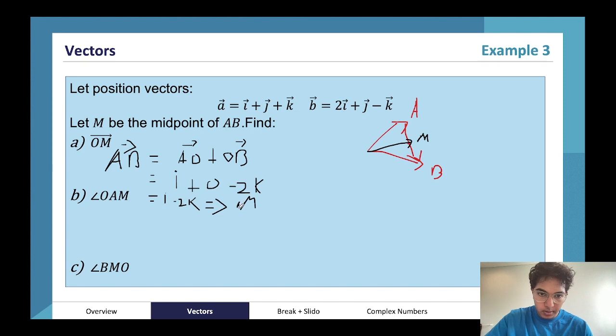So this implies AM is going to be equal to half of that, so i over 2 minus 2k over 2.